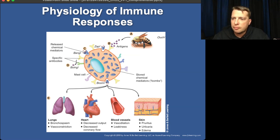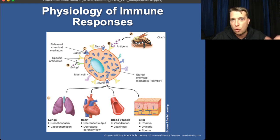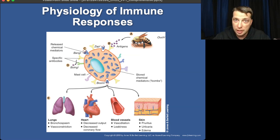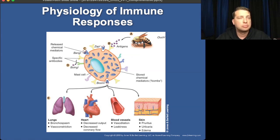Looking at the diagram: the basophil or mast cell activates with the antigen and starts releasing chemical mediators. Bronchoconstriction happens if it's in the lungs, constricting the airway to prevent more invaders from being breathed in — though that also hurts us. If it's in the heart, it slows the heart down, reducing contractility and decreasing blood flow so it doesn't spread the invader. It also causes vasodilation at the site so white blood cells can destroy the invading organism. That vasodilation causes the redness, warmth, and itching.